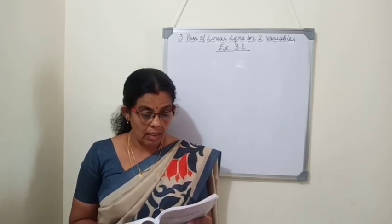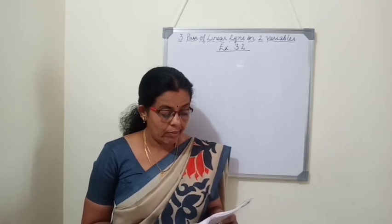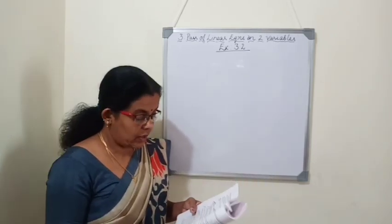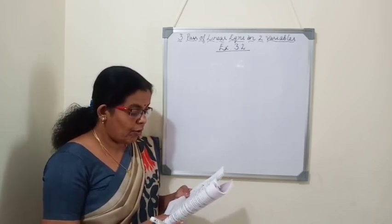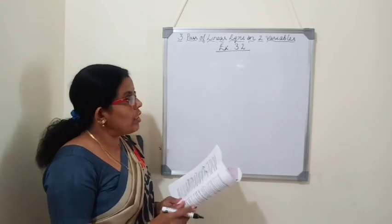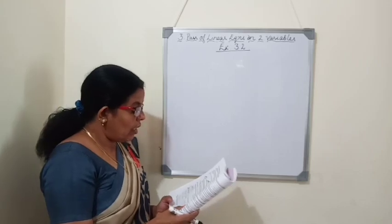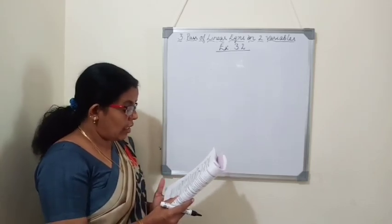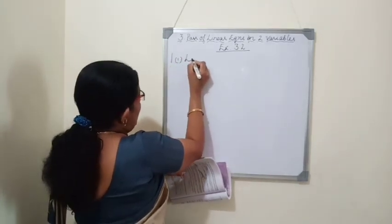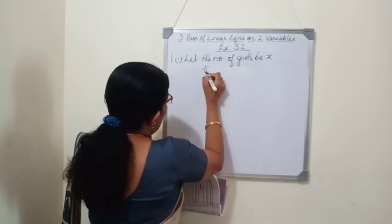Now we move on to Exercise 3.2. First question: form the pair of linear equations and find the solutions graphically. Problem: 10 students of class 10 took part in a math quiz. If the number of girls is 4 more than the number of boys, find the number of boys and girls. Let the number of girls be x and the number of boys be y.